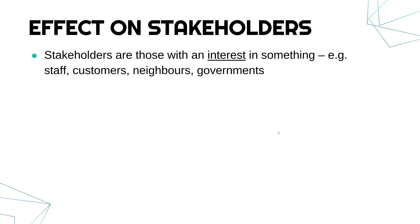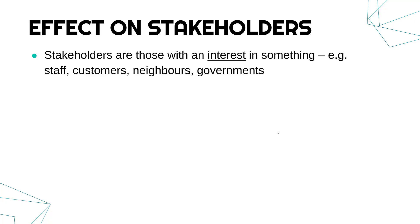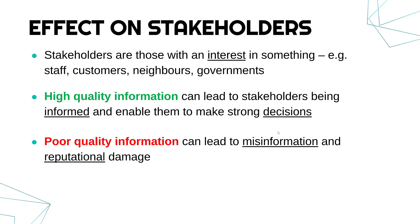An exam question could ask about a particular stakeholder and how they might feel about information being high or low quality. Generally speaking, high quality information is going to lead to your stakeholders being informed — knowing what's going on and having a good understanding of what is happening. If you are informed, it's usually easier to make decisions. If you've got lots of high quality information you are able to make an informed decision, but if you've got loads of low quality information you might have to make a guess, and that might be a poor decision from a business perspective.